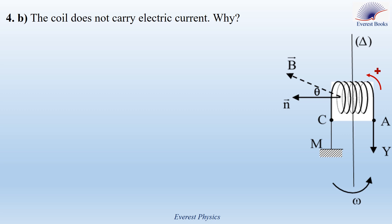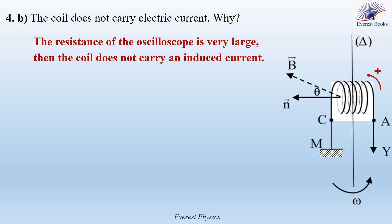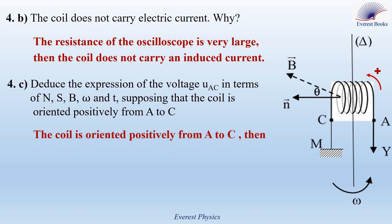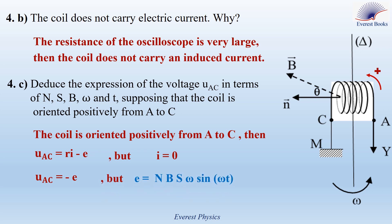Part four B: the coil does not carry electric current because it is connected across the terminals of an oscilloscope, which has a very large resistance, so the coil does not carry an induced current. Part four C: deduce the expression of the voltage Uac in terms of N, S, B, omega, and t, supposing that the coil is oriented positively from A to C. If the coil is oriented positively from A to C, then Uac equals RI minus E, but the current is equal to zero. Then Uac equals minus E. Replacing E, we get Uac equals minus NBS omega sine omega t.